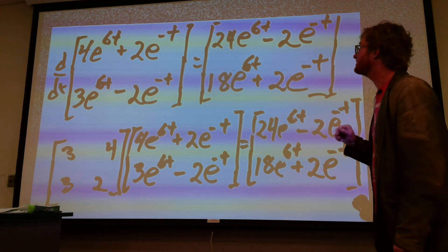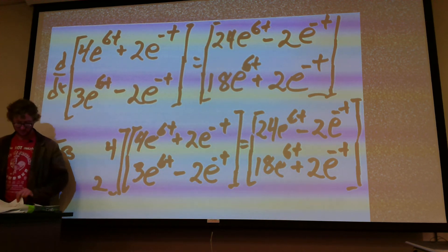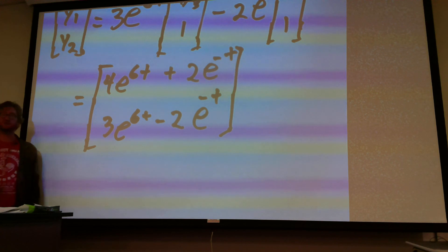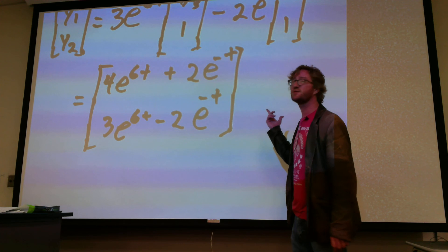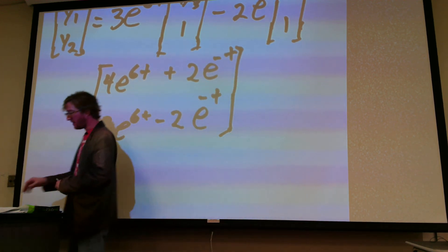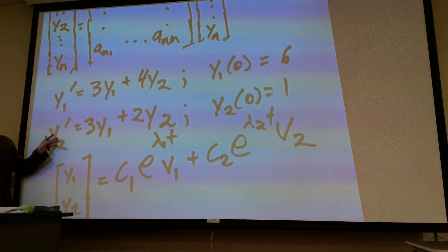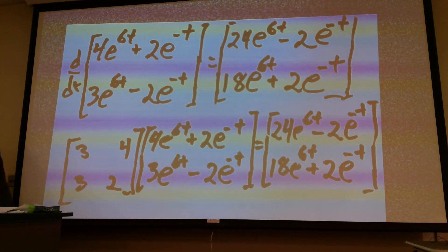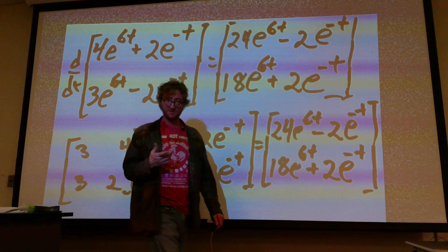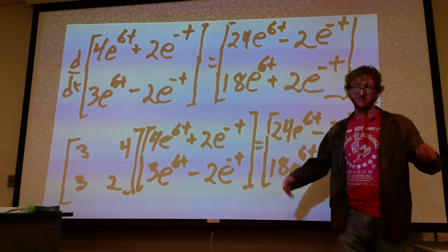There's one other question: does it match the initial conditions? If we plug in t=0, we get 2 plus 4 which is 6 for Y1, and 3 minus 2 which is 1 for Y2 — yes, it satisfies the initial conditions. So we know we have a solid answer: not only are the initial conditions satisfied, but the derivative and the matrix actually perform the same operation on our solution.